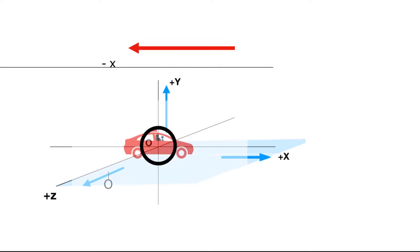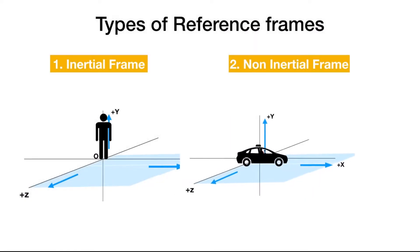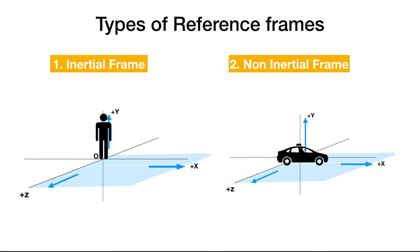Are you observing from the ground? Or from a vehicle moving with constant velocity? Or from an accelerated vehicle? Depending on the motion status of the observer, there are two types of reference frames: inertial frame, which is attached to the ground, and non-inertial frame, which is attached to the car.